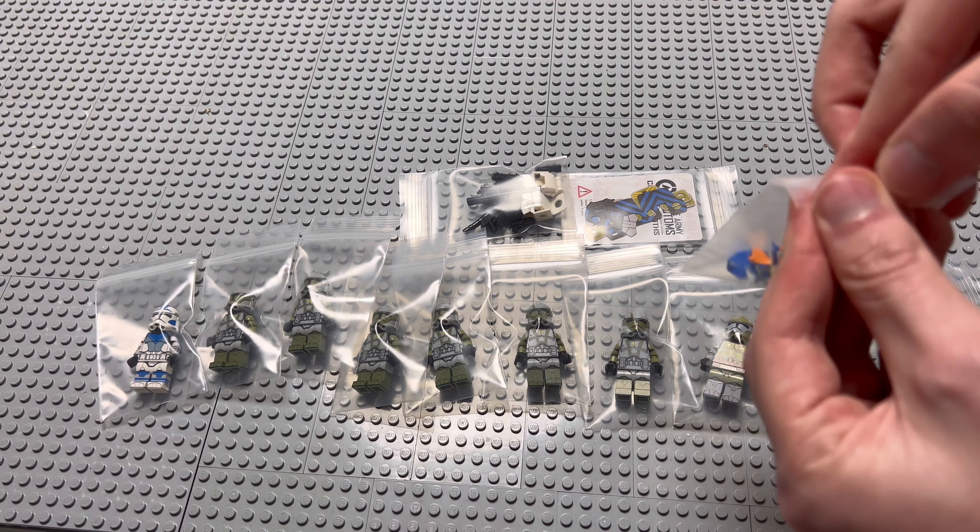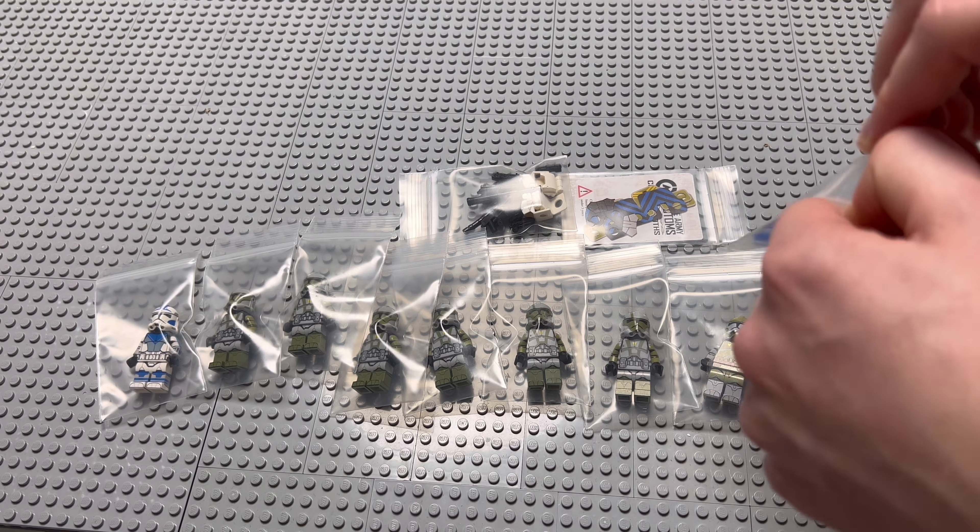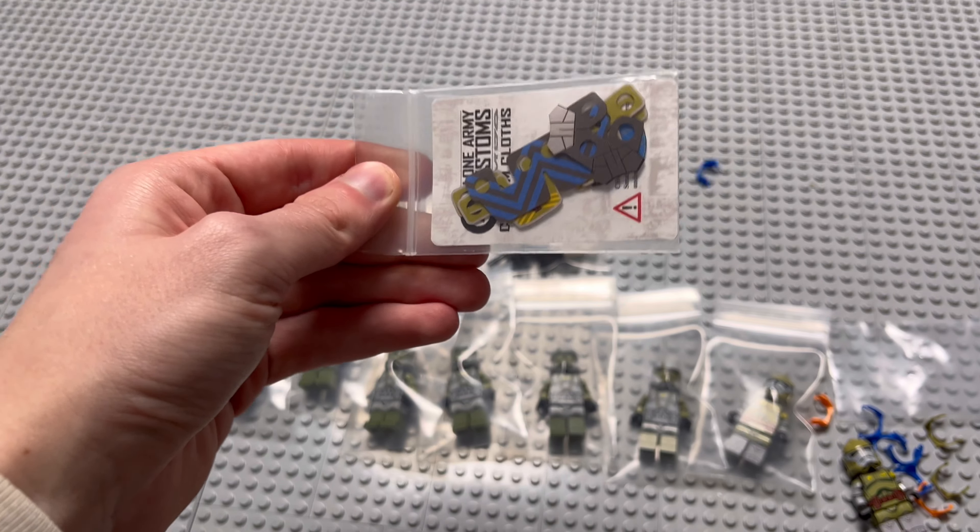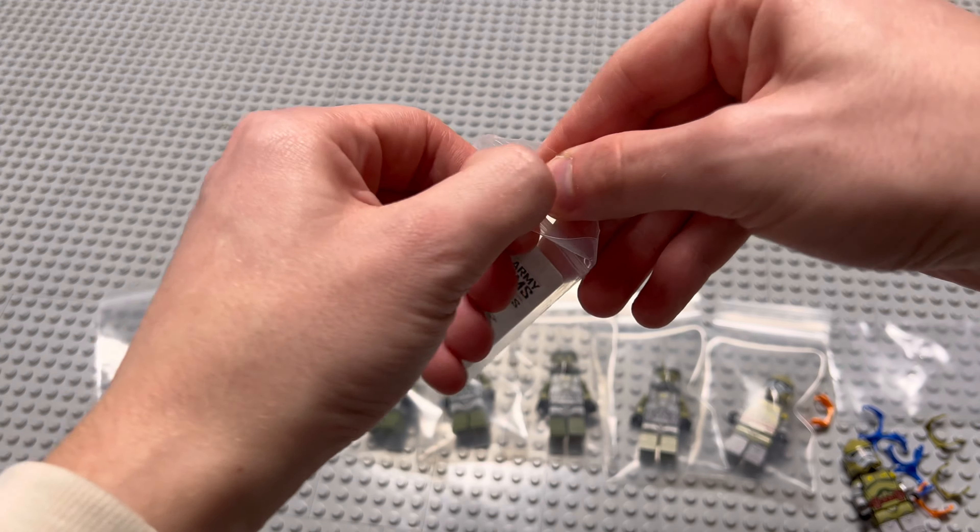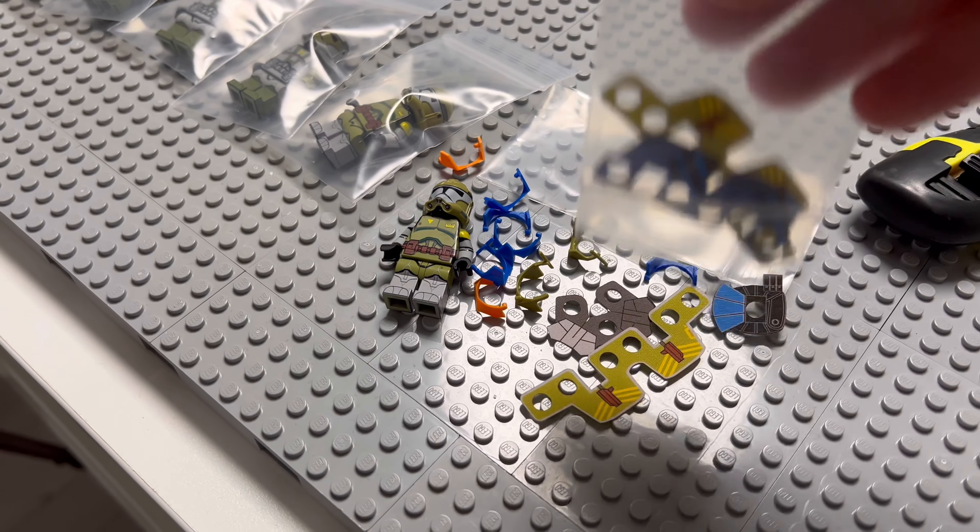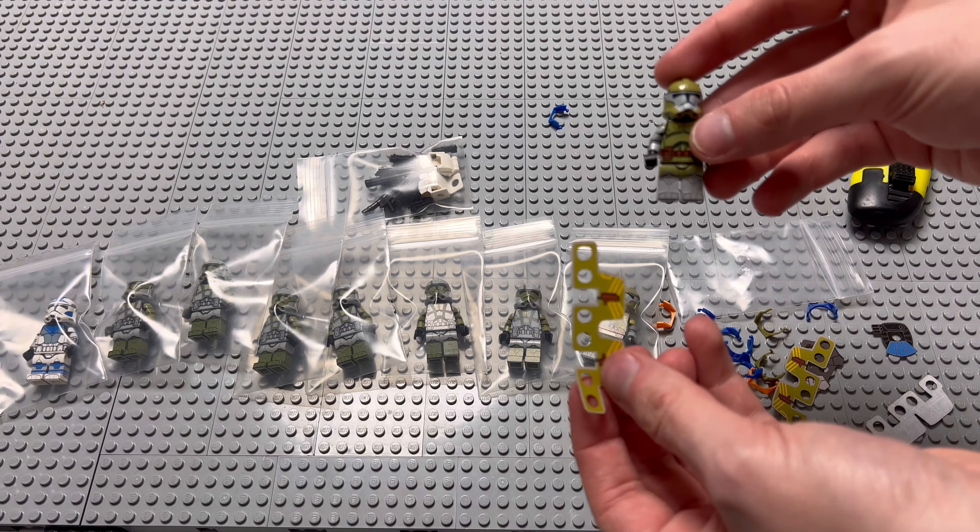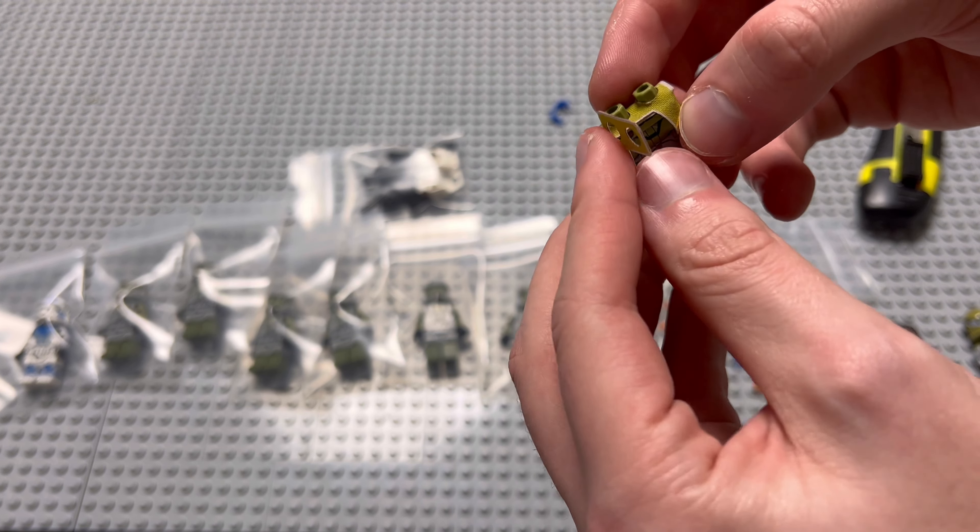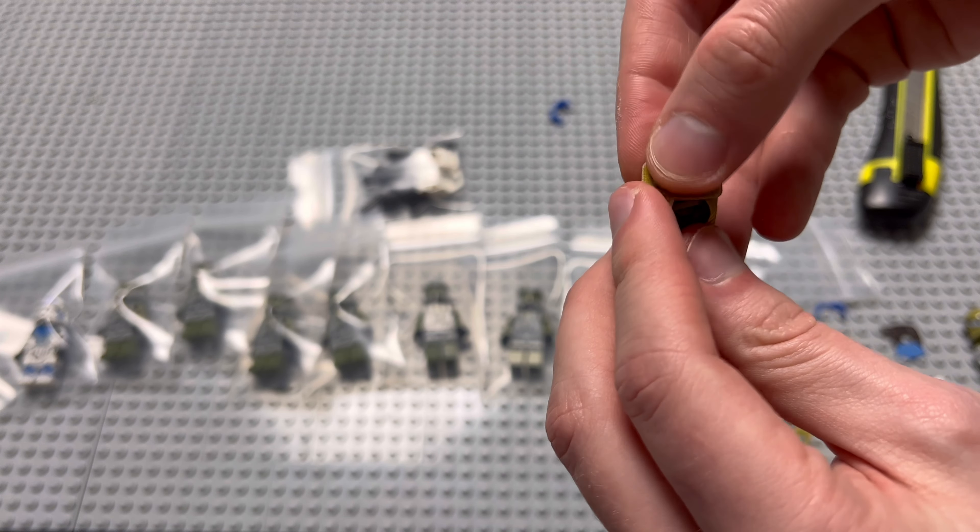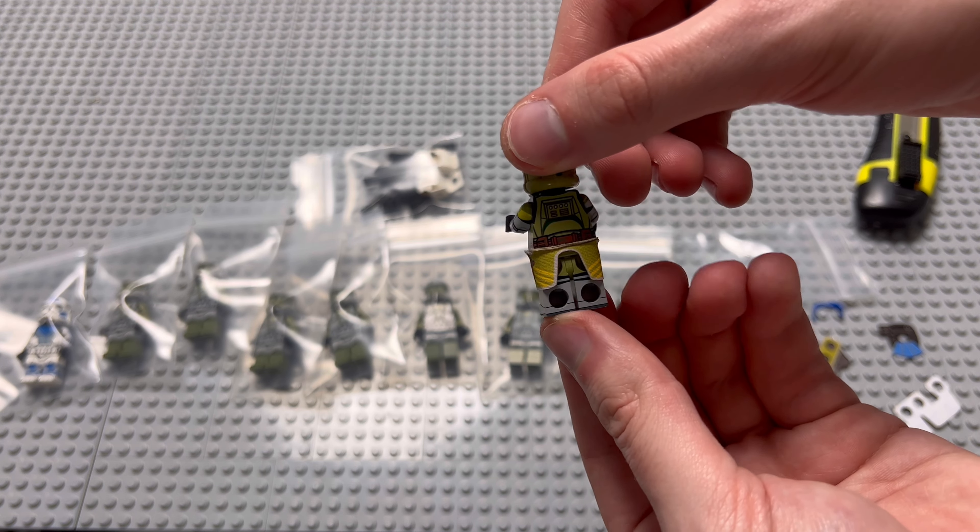I guess we can give him his attachments and see how he turns out. Here we got the waistcapes. So let's start out by putting on the waistcape. This one was pretty tough, but I think we'll be able to manage. Here we go.